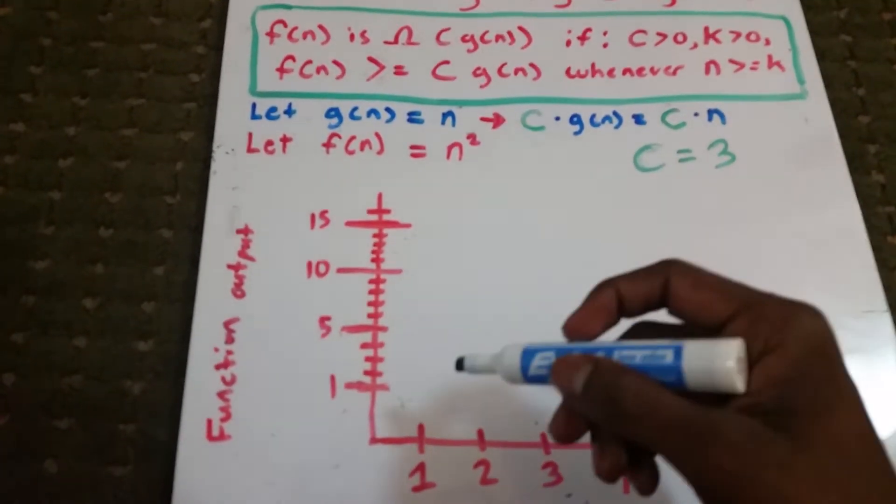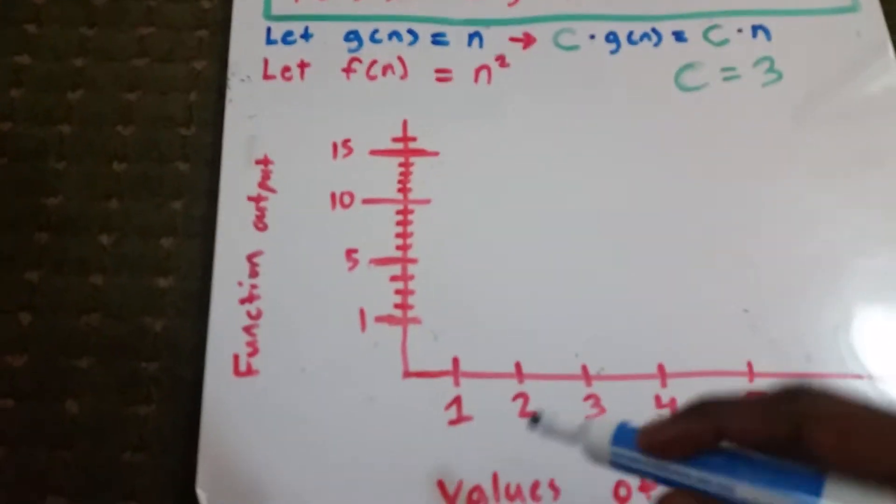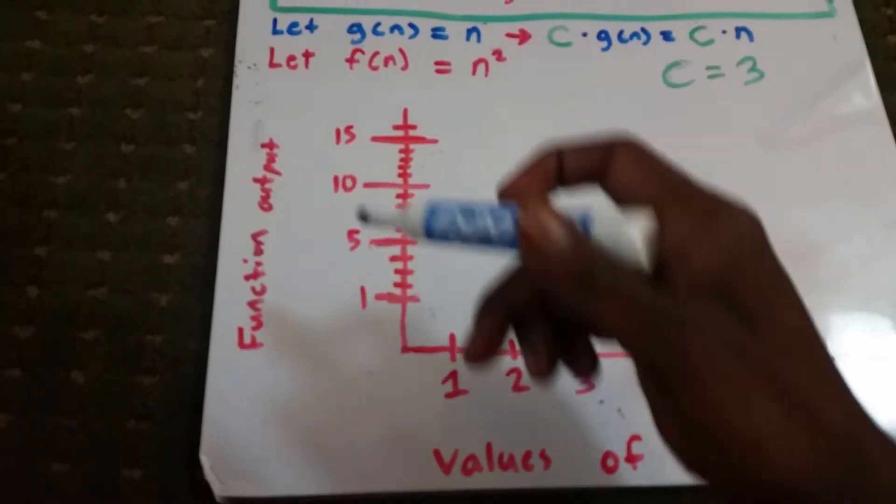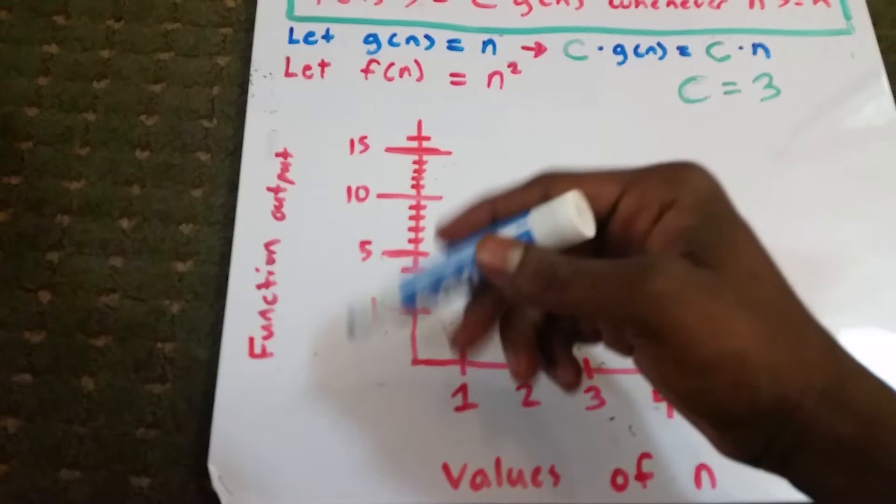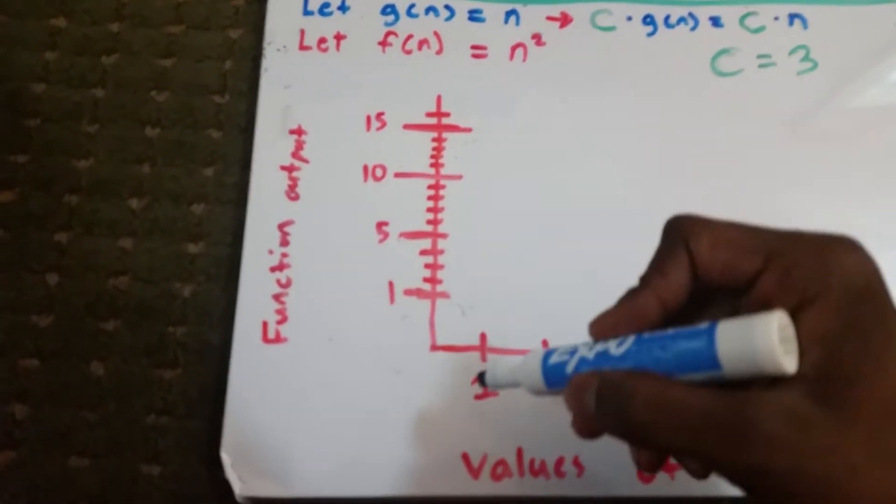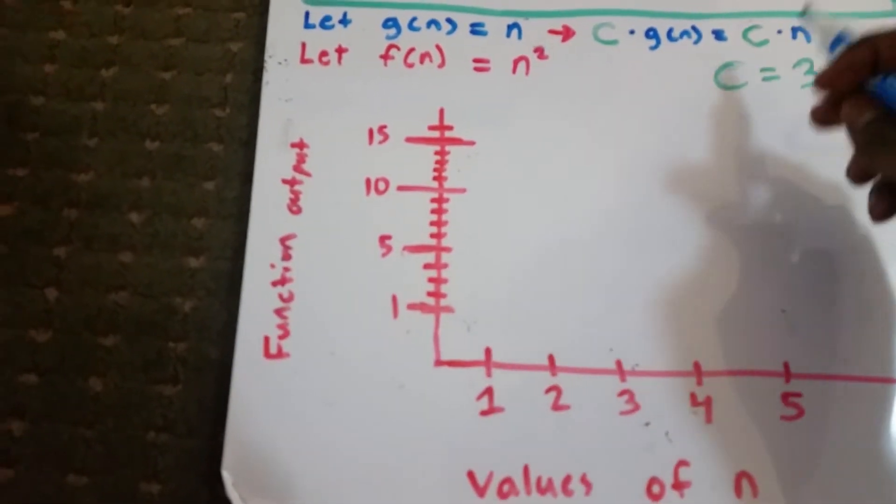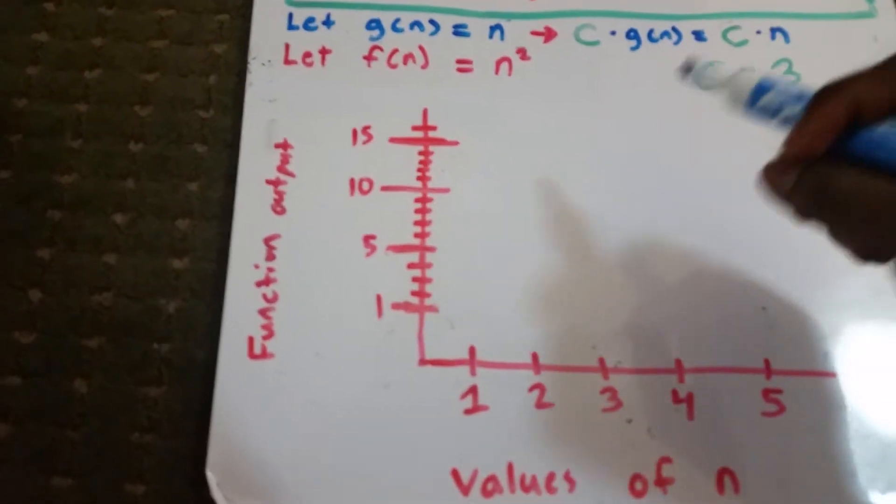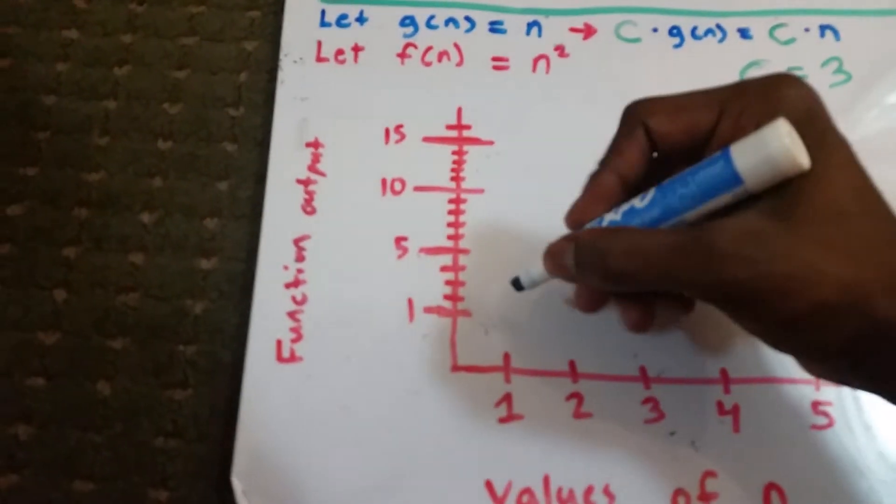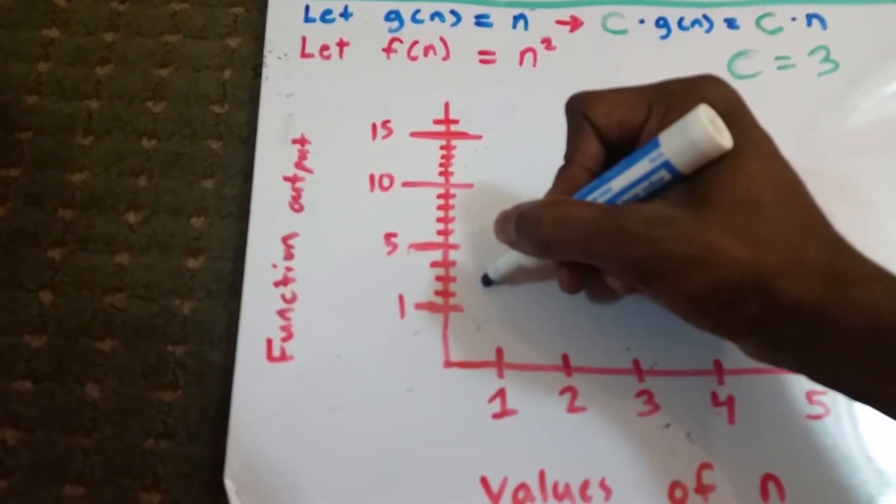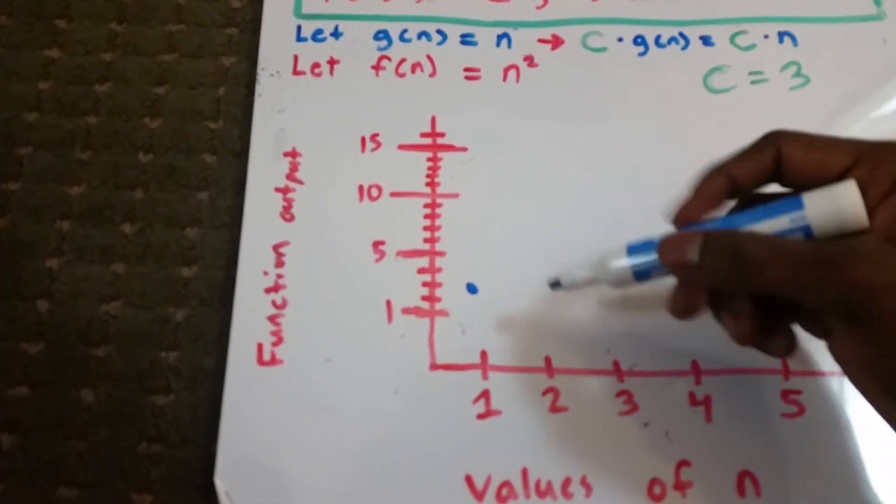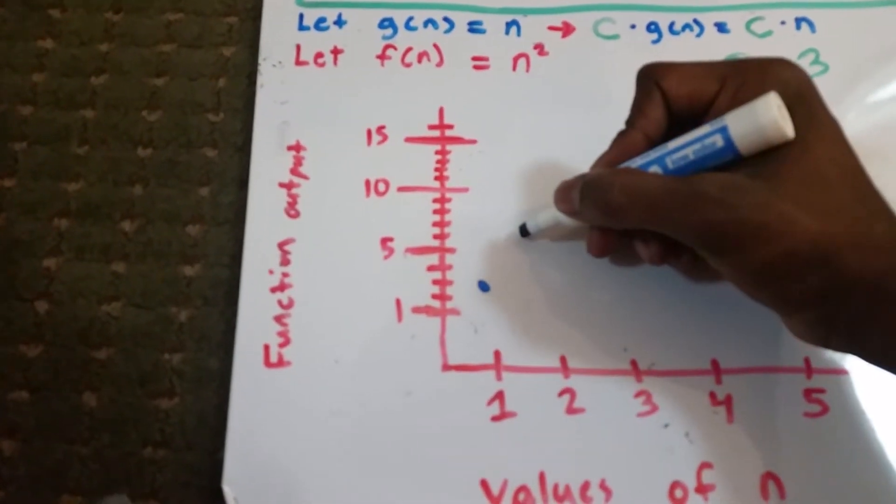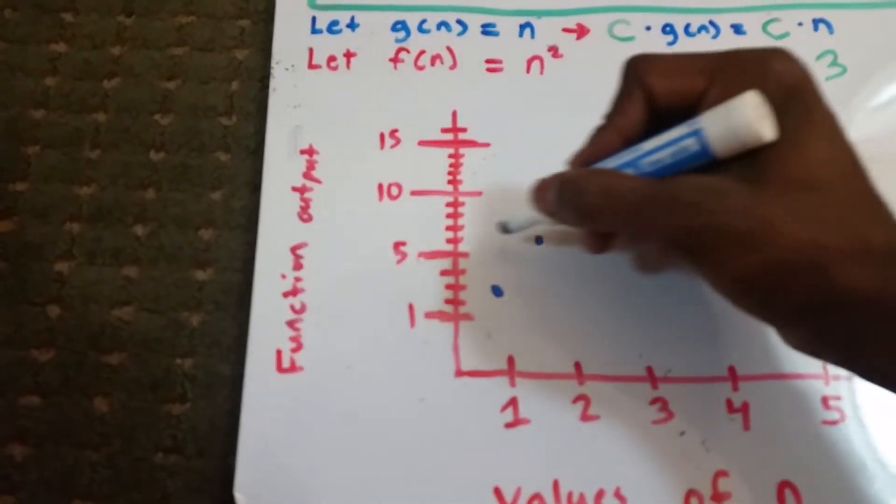Alright, so now when n, these are our values of n down here on the x-axis and our function output on the y-axis. So when n is equal to 1, then c times n is 3 times 1, so we get 3. We'll put a little dot there. And when n equals 2, we get 2 times 3, we get 6. I'm going to put a dot there, there's the 6.